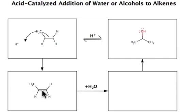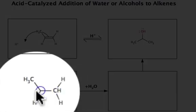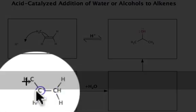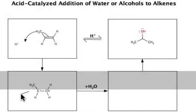And then by using my bonding tool and my hotkeys for charge, I could show generation of this carbocation intermediate.